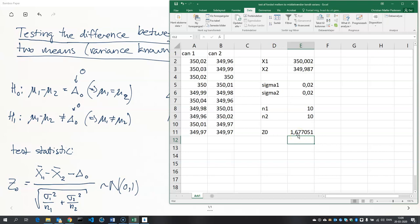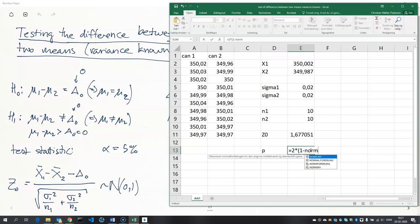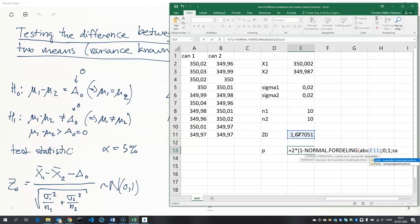And then we compute the p-value. And that's two times one minus—and then we need the normal distribution (in Danish normalfordeling)—and we input the absolute value of the test statistic. And we choose zero as the mean and one as the standard deviation because it's a standard normal distribution, and we write true (or in Danish sand) for the cumulative distribution function.